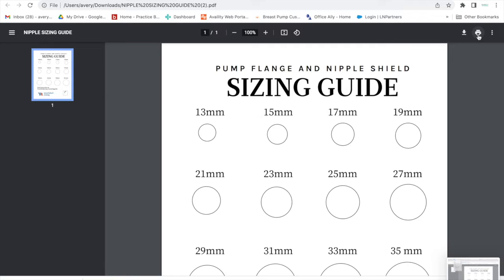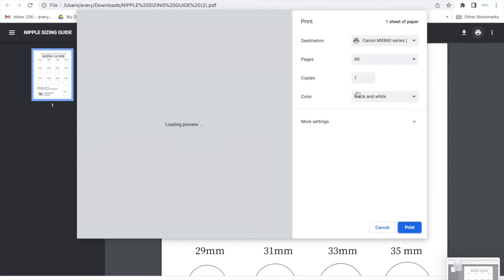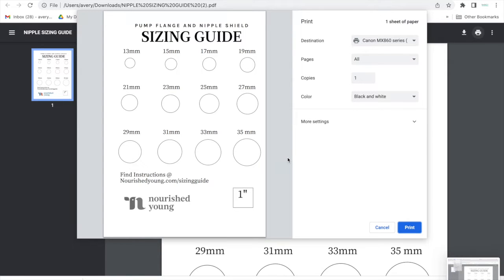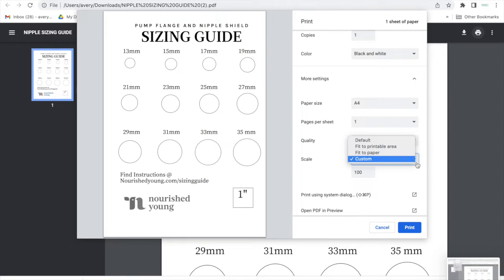The first thing that you need to do when you're printing this guide is to make sure that your print settings are set accurately. You're going to have to go under more print settings, click that, and then find the button that says scale. Set scale to custom and then change custom and make sure it says 100% and then you're ready to print.